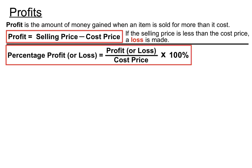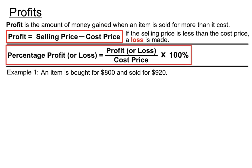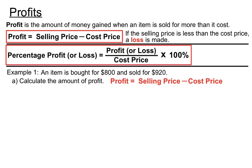Let's look at an example. An item is bought for $800 and sold for $920. The question asks us to calculate the amount of profit. Profit equals selling price minus cost price, so $920 minus $800 gives us a profit of $120.